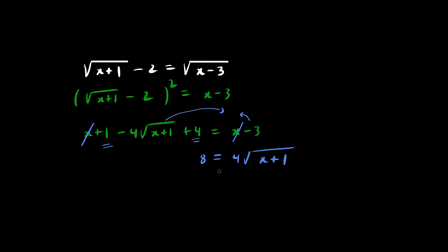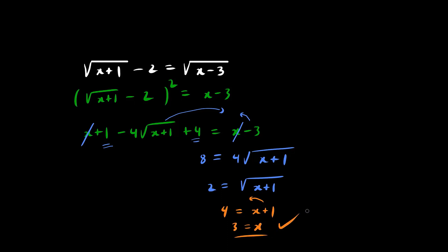Now let's divide both sides by 4. So we have x plus 1 equals 2. And finally the question is starting to look a bit easier. We square both sides, and we have x plus 1 equals 4. And finally we get 4 minus 1, which is 3. And here's our answer.